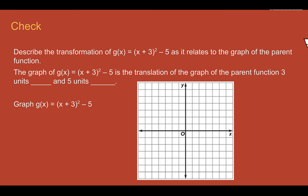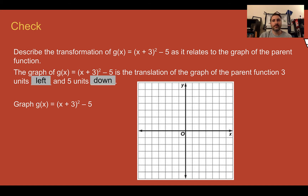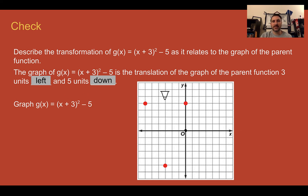Check your understanding: describe the transformation shown as it relates to the parent function. Pause the video now and complete the check. Check your answer: this went three units left and five units down. Originally the vertex would be at zero, zero — now we're at three left, five down. From there, we can plot a couple other points to figure out what this graph would look like. The y-intercept would be up here; if we multiplied it out and combined it with negative five, we'd end up with four. Using our axis of symmetry, we can make a mirror and reflect it over.